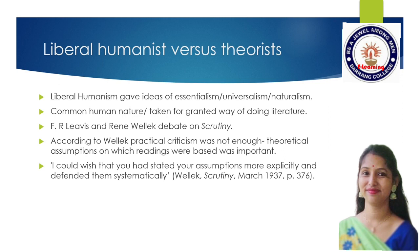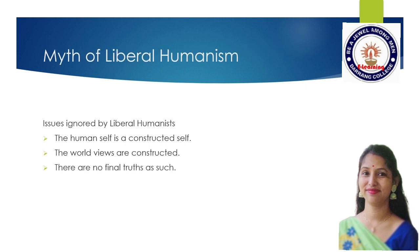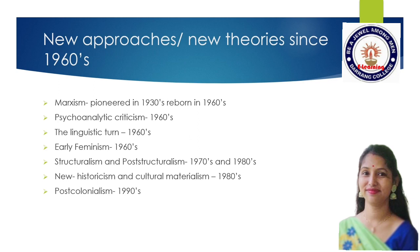A theorist such as René Wellek criticized F.R. Leavis and asked him to reconsider his work on the great tradition, arguing that practical criticism was not enough — a theoretical assumption was needed on which certain readings could be judged best. Wellek stated: 'I could wish that you had stated your assumptions more explicitly and defended them systematically.' This revealed the need for systematic organization in the study of literature — what we know as literary theory. An essay called 'The Myth of Liberal Humanism' addresses the issues of liberal humanism: the human self is a constructed self, world views are constructed and not natural or given, and there are no final truths.